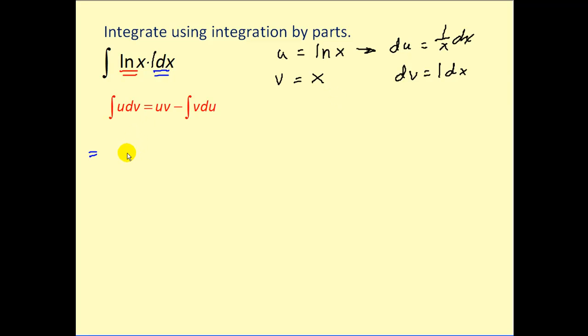Let's apply our formula. u times v would be x natural log x minus the integral of v times du. Our v is equal to x. Our du is equal to one over x dx.